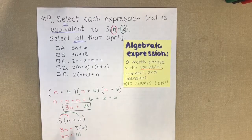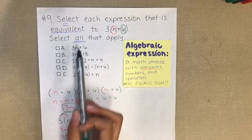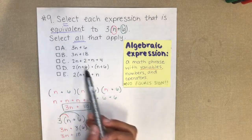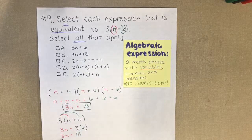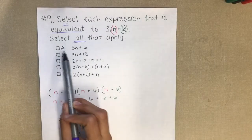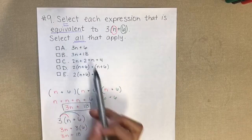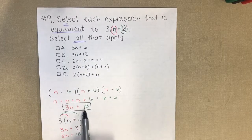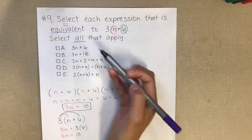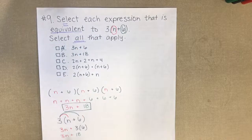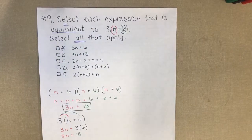Now that I have my expression 3n plus 18, I need to go back and figure out which answer choices are equal to it. Answer choice A is 3n plus 6. Well, 3n is the same, but 18 and 6 are not the same, so A is not equal. I'll put a little line through it to remember.